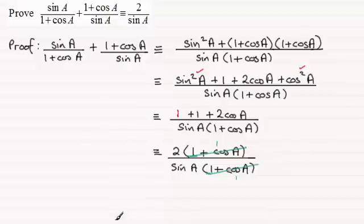And so therefore, what we're left with then is 2 divided by sin A. And there you have it.